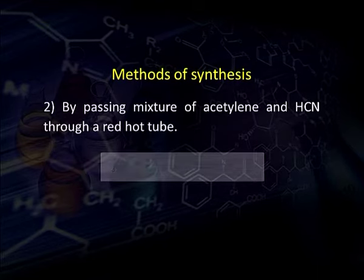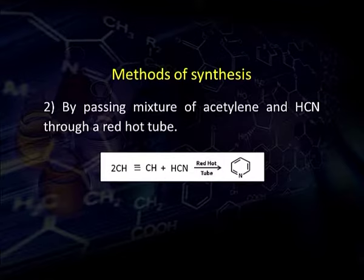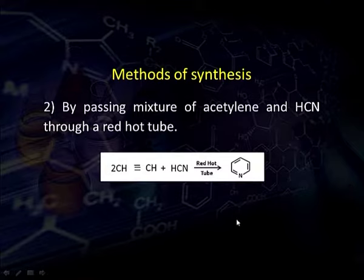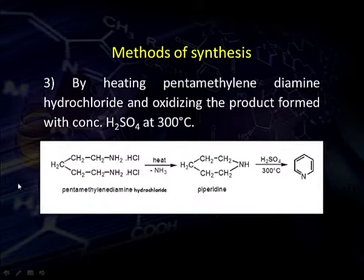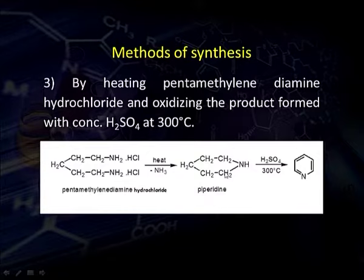Pyridine can also be synthesized in the laboratory. One method involves passing a mixture of acetylene and hydrocyanic acid through a red hot tube. When two molecules of acetylene along with one molecule of hydrocyanic acid are passed through a red hot tube, pyridine is formed. Pyridine can also be synthesized from pentamethylene diamine hydrochloride. When pentamethylene diamine hydrochloride is heated, ammonia is evolved and piperidine is formed, which is a reduced form of pyridine. This can be oxidized by heating with concentrated sulphuric acid at 300°C to give pyridine.